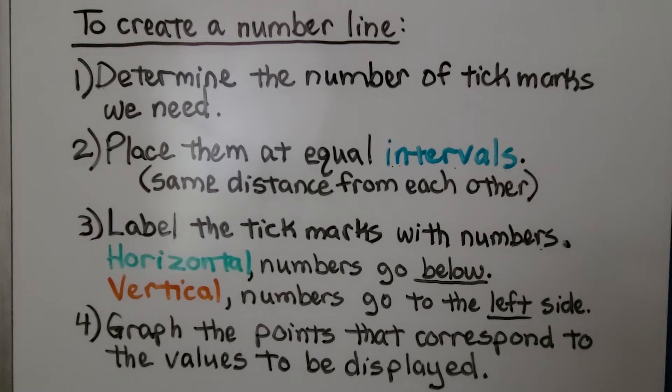The horizontal number lines will have the numbers go below it. And vertical number lines, the numbers will go to the left side of the number line. And then we graph the points that correspond to the values to be displayed.